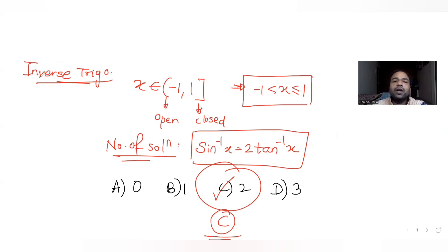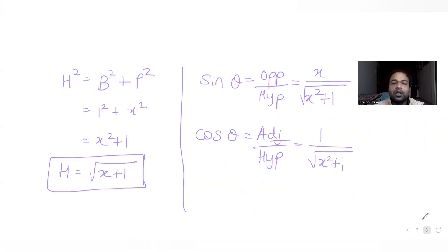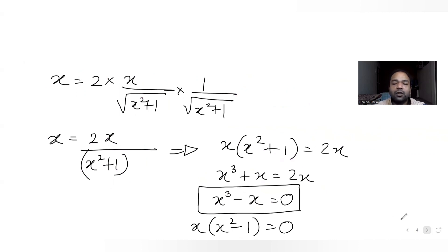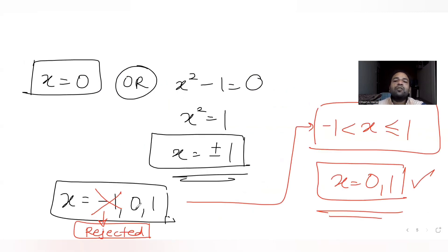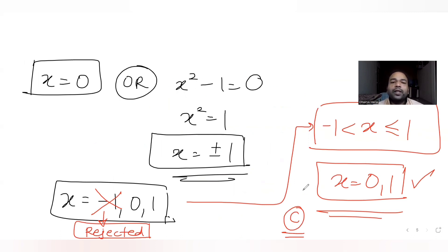So the approach was: for this type of inverse trigonometric function question where a range is given, solve the equation to find all candidate values, then check which ones satisfy the given domain restrictions. Here we got three values but only two satisfy the range, giving us two solutions and answer option C.